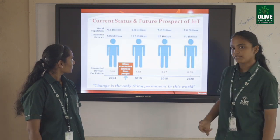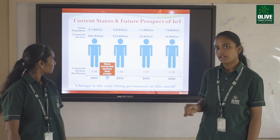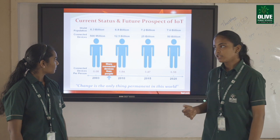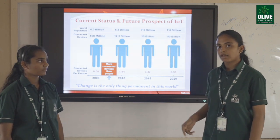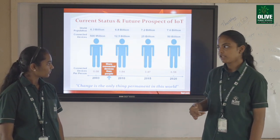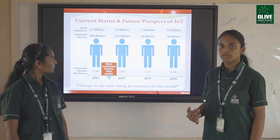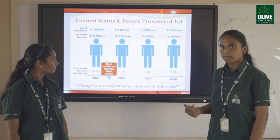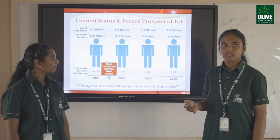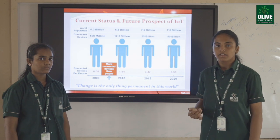The current status and the future prospect of IoT. In 2003, the population being 6.3 billion, the number of connected devices were almost 500 million. A few years later in 2010, the population was at 6.8 billion. In 2015, the population were at 7.2 billion and the connected devices were at 25 billion. After a few years in 2020, the world population was almost 7.6 billion and the connected devices were 50 billion. In future, the connected devices and the people tend to increase.